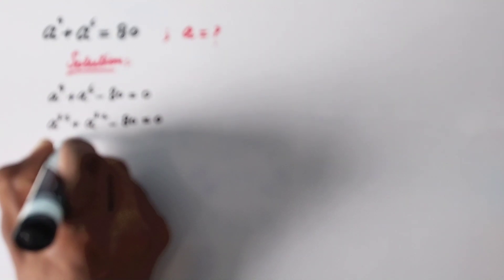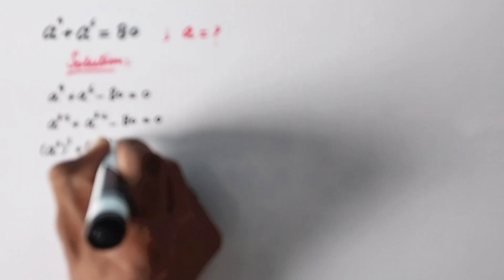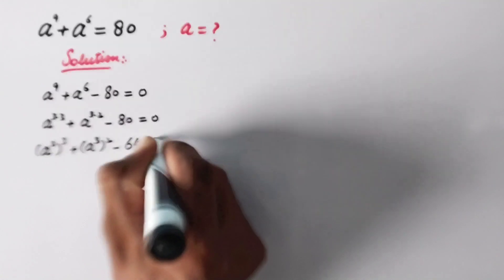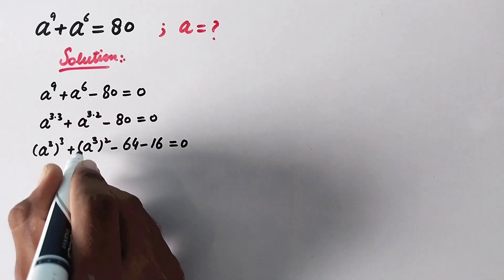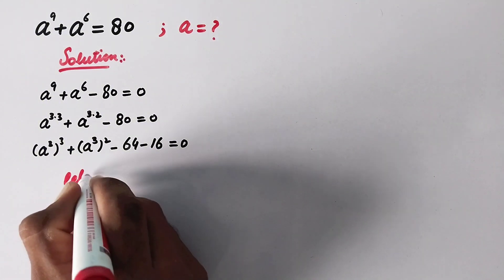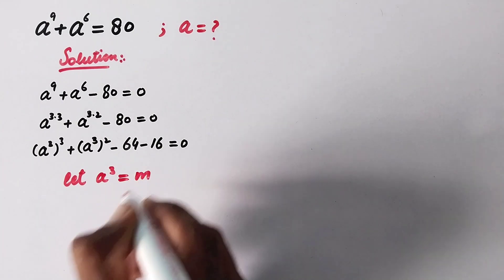So then we have A raised to the power 3, raised to the power 3, plus A raised to the power 3, squared. This 80 can be written as 64 minus 16, so the equation becomes: A raised to the power 3, cubed, plus A raised to the power 3, squared, minus 64 plus 16 is equal to 0. Now here we will let A raised to the power 3 equal to M.